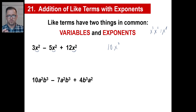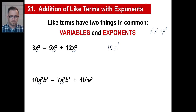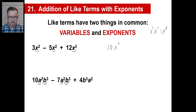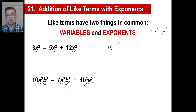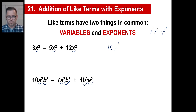Pause and copy. Are these like terms? This has an a squared — so does that one. It also has a b to the third — so does the next one. And the third term: a squared, b to the third — yes, they all match. So we have 10 of something minus 7 gives 3, plus 4 gives 7 of that something, which is a squared b to the third.